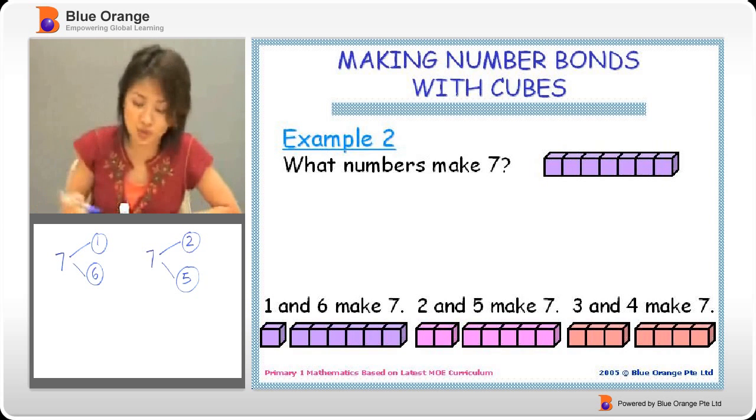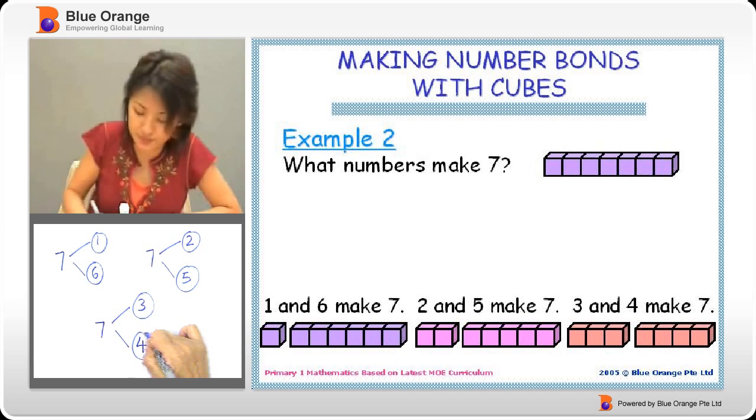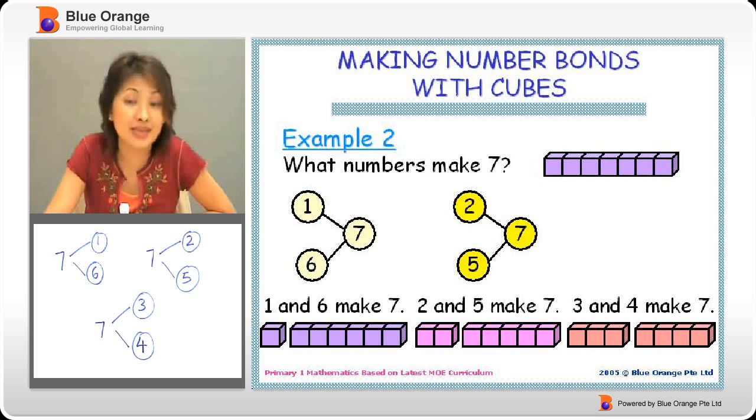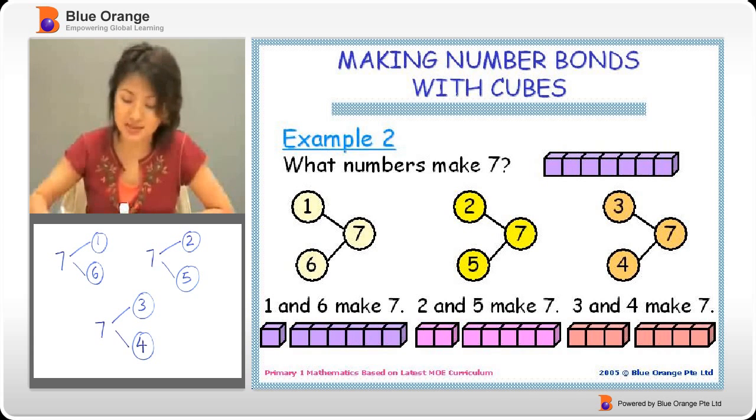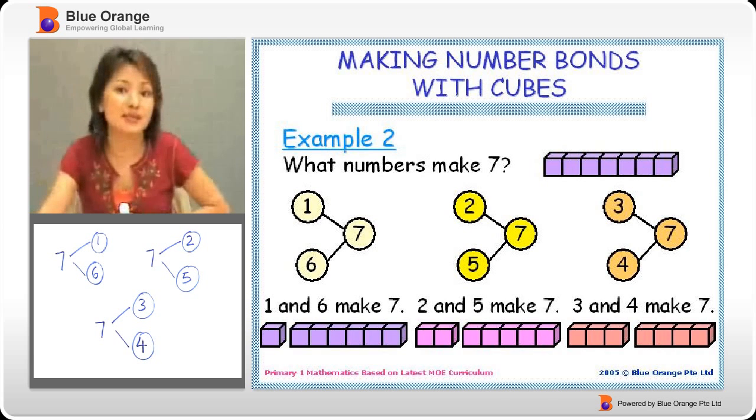Then, I can also make another number bond. Seven split into three and four. So, this is how I write my number bonds. Seven is one and six. Seven is two and five. Seven is three and four. So, number bonds is written in this manner, the splitting manner. So, as long as you remember that number bonds can help you to split the number, then it's easy for you.